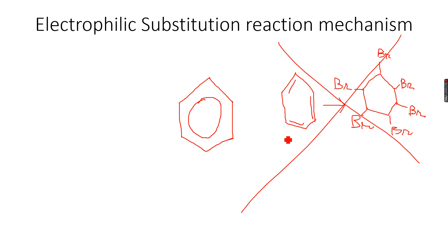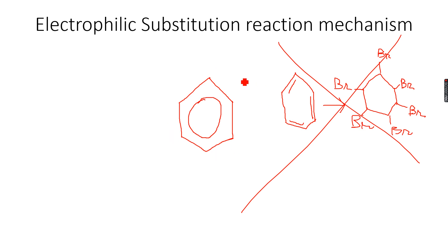They often ask the question: why does benzene not undergo electrophilic addition reactions even though it is unsaturated like ethene? Your answer should be that in benzene, the delocalized pi electron cloud spreads over the entire ring, making the molecule very stable because it reduces the negative charge density over the entire molecule. Hence, benzene is very unreactive and will not undergo electrophilic addition.